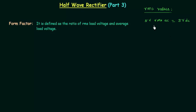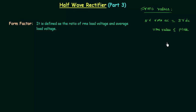The RMS value is always smaller than or equal to the peak value. I hope you now have a clear understanding of what RMS value is. Now we will move to the form factor.